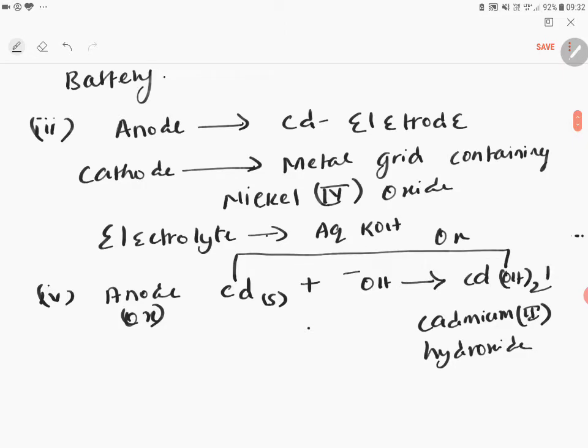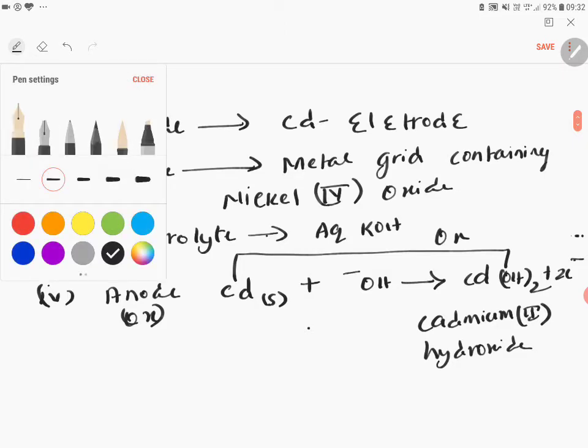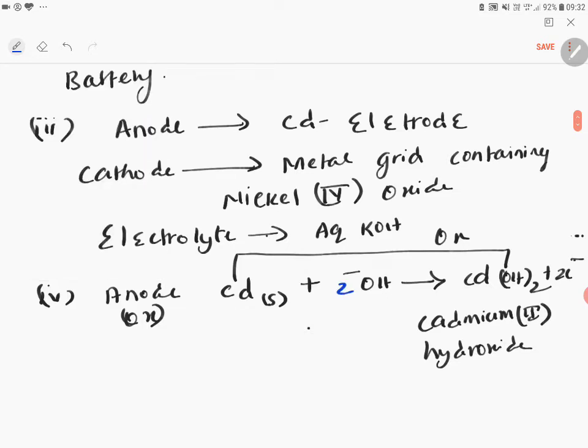Here once again you have to write +2 electrons. The charge should be balanced. To balance this equation, 2OH⁻ is there, you can put 2 here and the equation is supposed to be balanced.